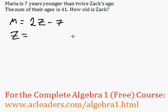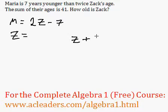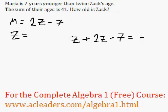We know that the sum of their ages is 41, so that's Zach's age and this is Maria's age — they're going to add up to 41.